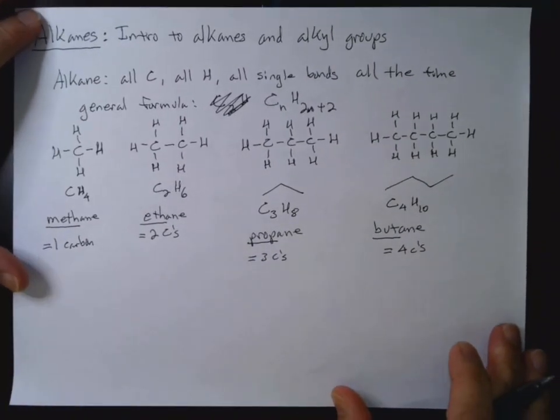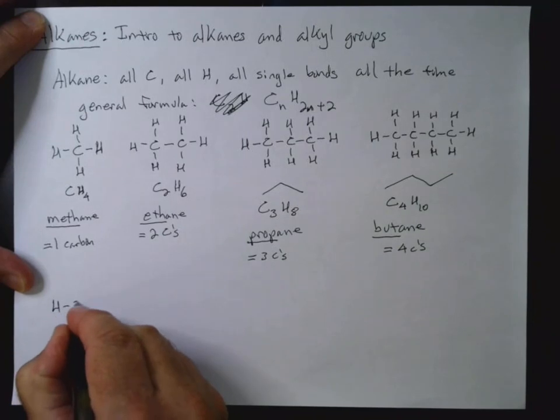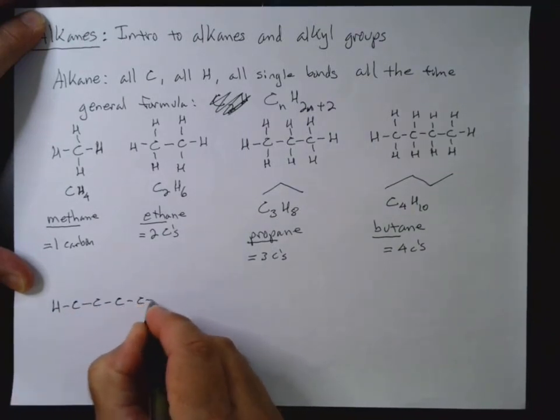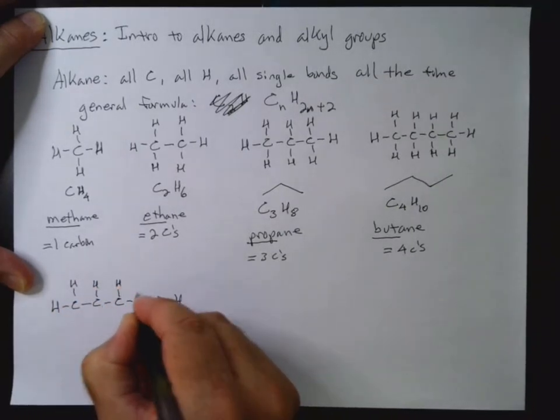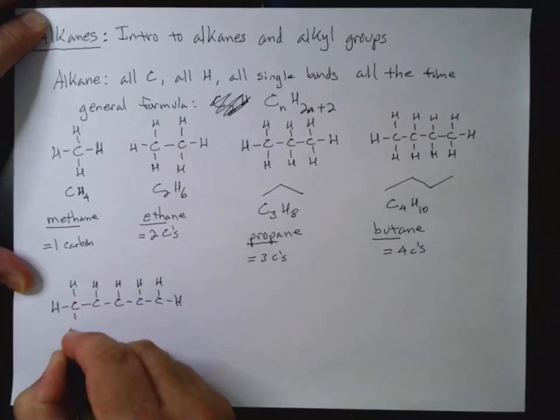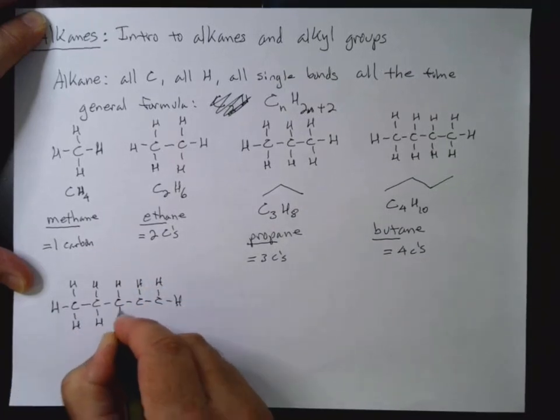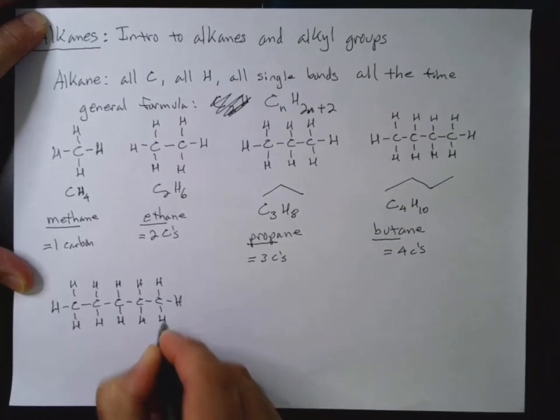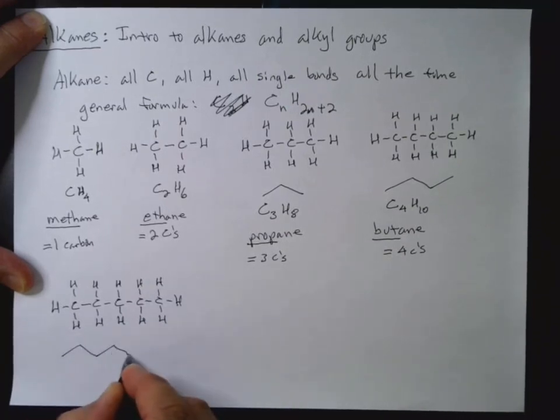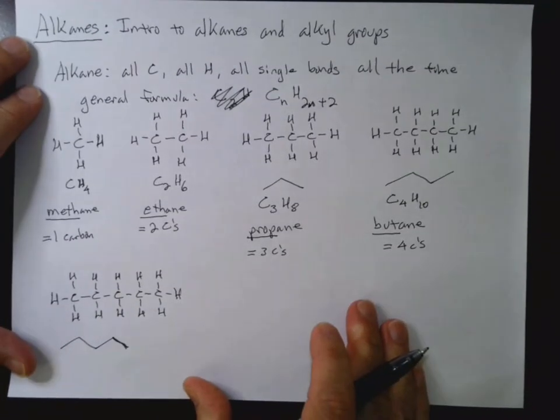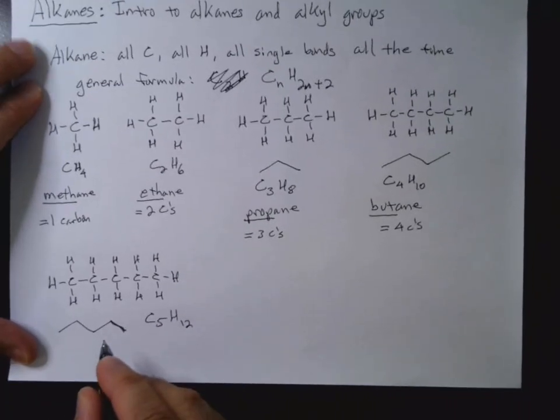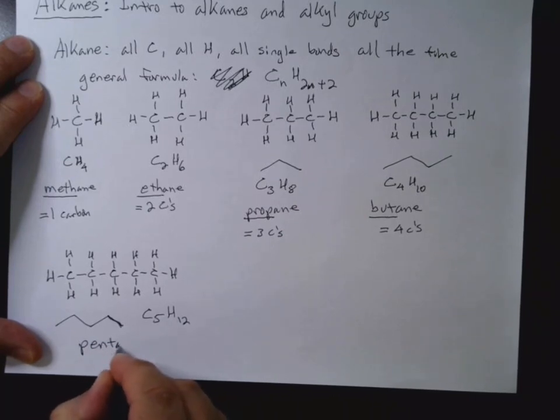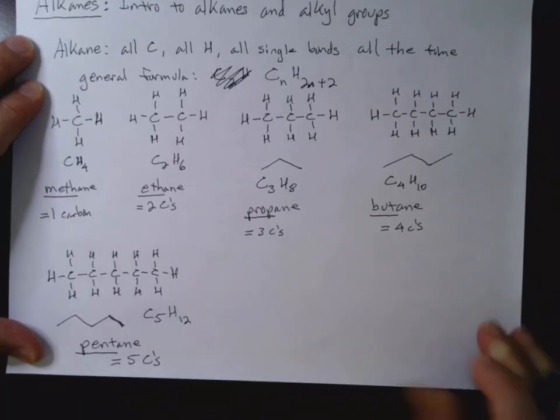We can continue and have 5 carbons. 1, 2, 3, 4, 5. And this is called pentane, where pent equals five carbons.